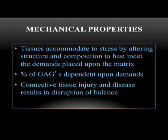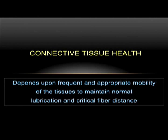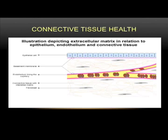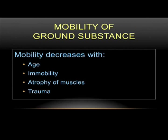Connective tissue health is dependent upon the frequency and appropriate mobility of the tissues to maintain normal lubrication and what we call critical fiber distance. In the illustration we see epithelial cells, arterioles, and other fibroblasts amongst the matrix. When we have that mobility, the distance between each of those cells is maintained. If they're not, you can have mechanical friction and disruption which leads to poor optimal movement and health.